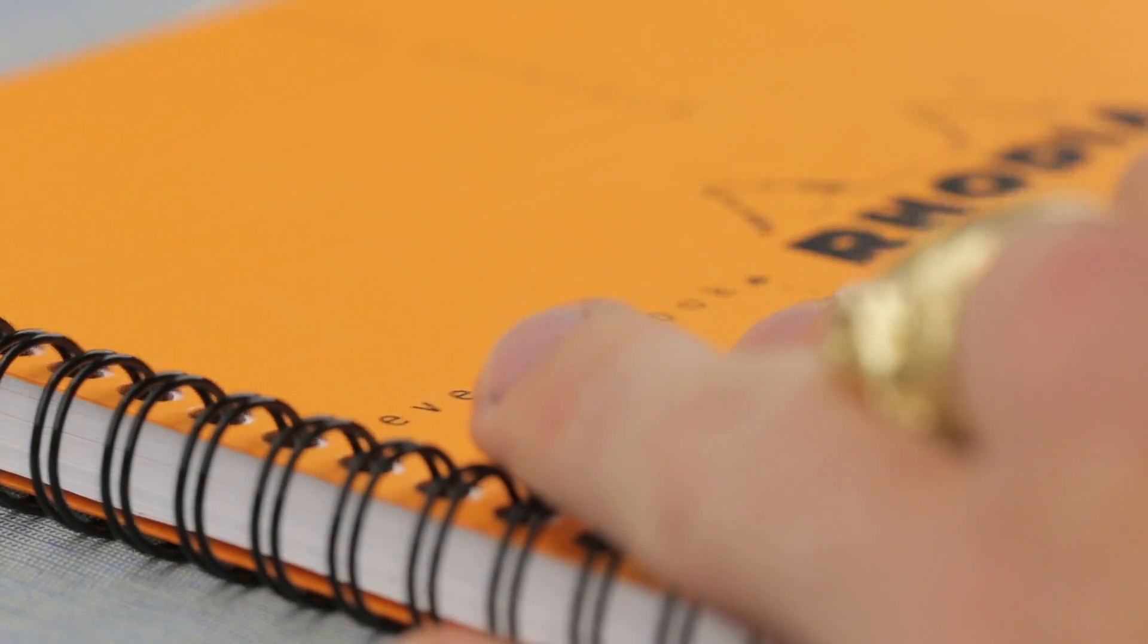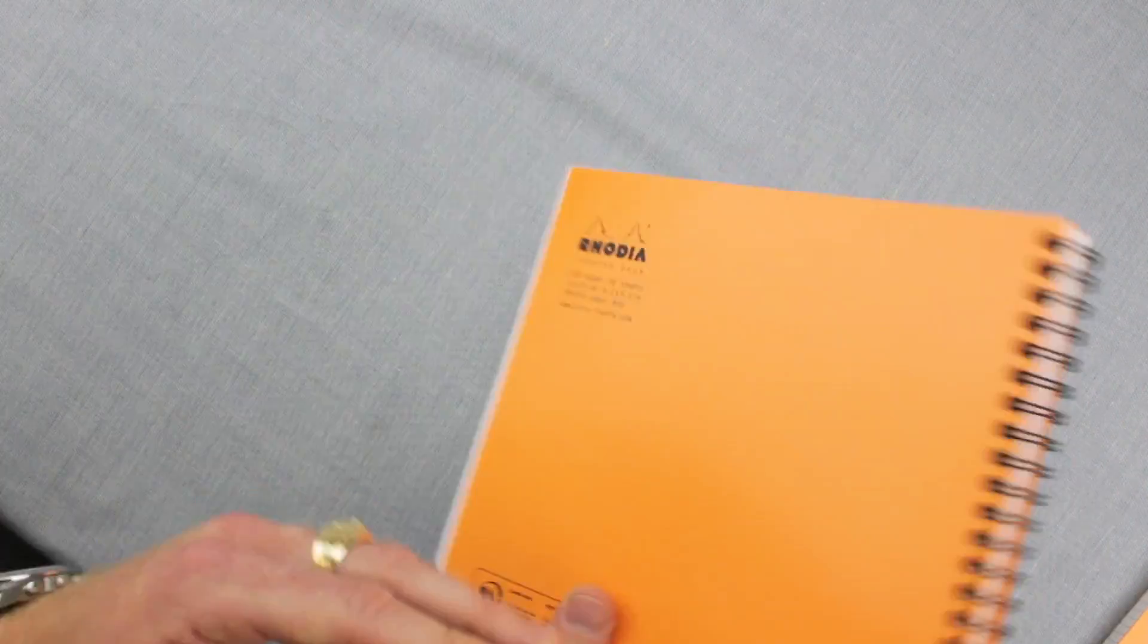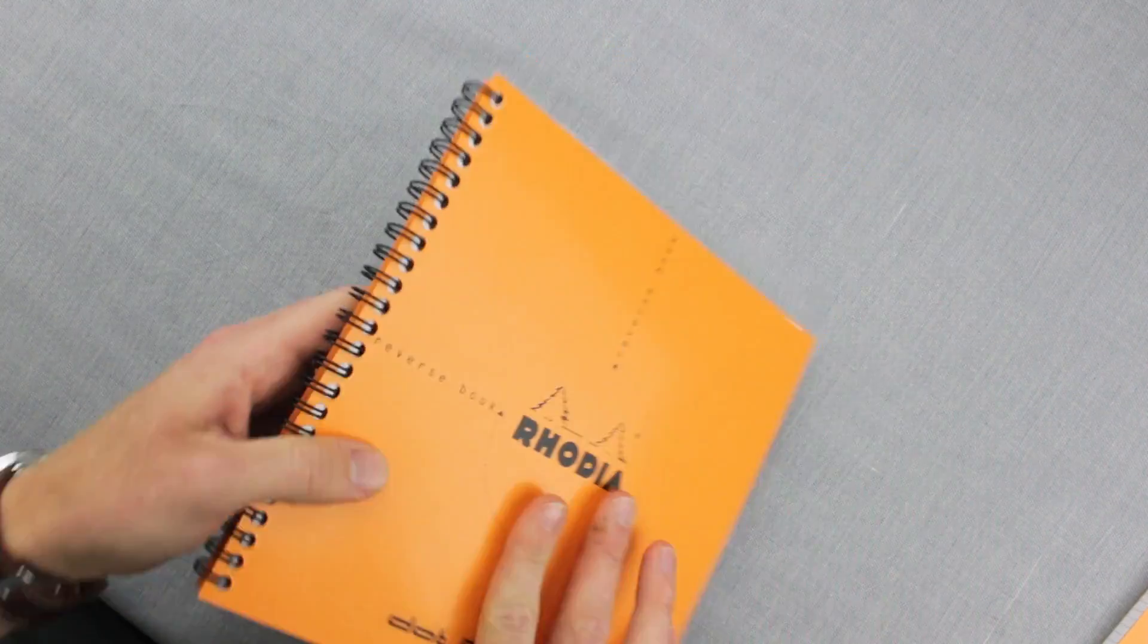The notebook itself has a hard laminate cover on the front and the back, and it's got a double ring binding.